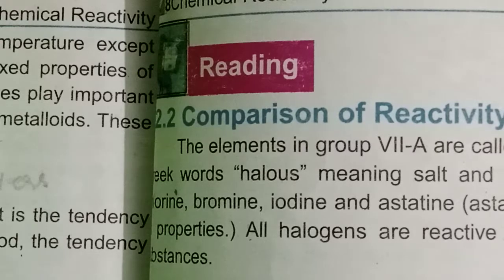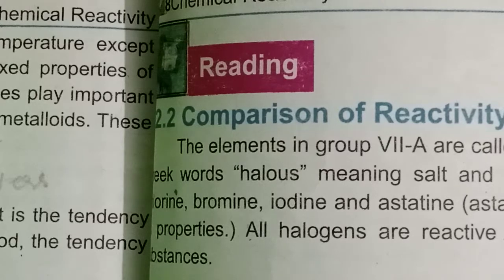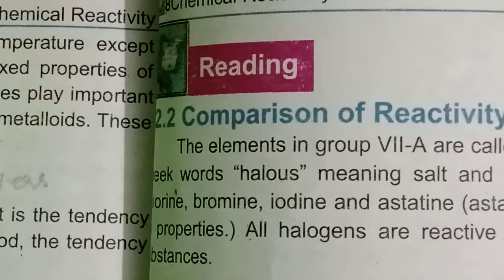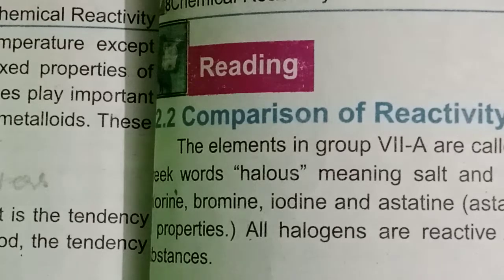All the halogens are reactive non-metals — these are very reactive. They make salt: they react with metals to form salts, and these salts are called halides.